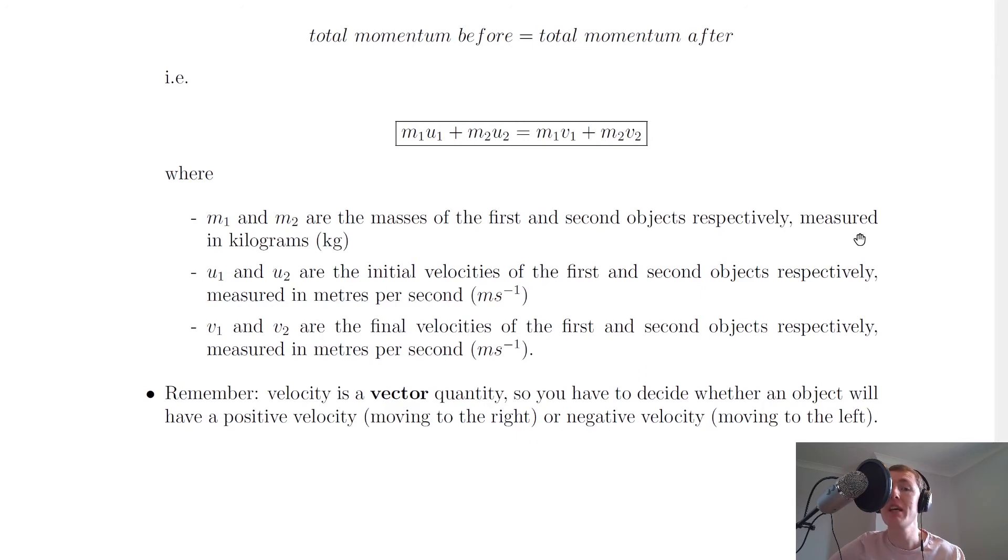u₁ and u₂ are the initial velocities of the first and second objects respectively, measured in meters per second. v₁ and v₂ are the final velocities of the first and second objects respectively, measured in meters per second. There's nothing new here - we've just given mass, initial velocity, and final velocity some subscripts.